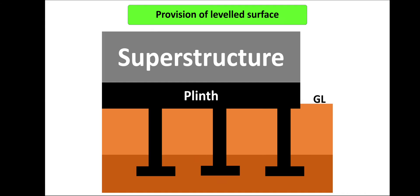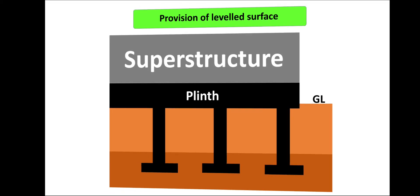A foundation provides a leveled surface by serving as a common horizontal platform. The footing rests on hard strata, upon which the plinth is built, and then the superstructure is constructed. Therefore, the horizontal platform for the construction of the superstructure is provided by the foundation or footing.